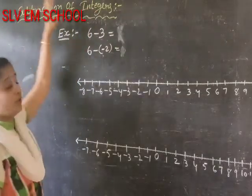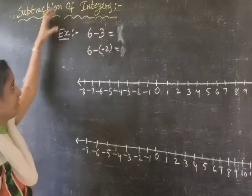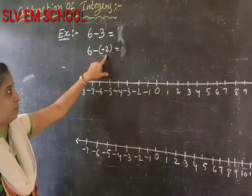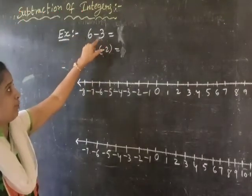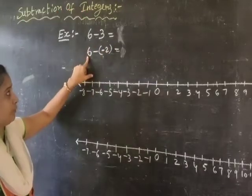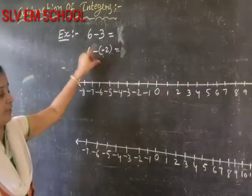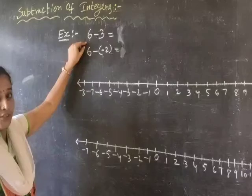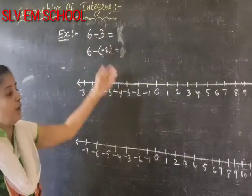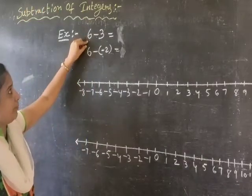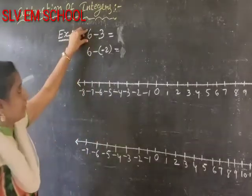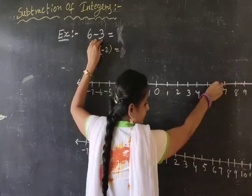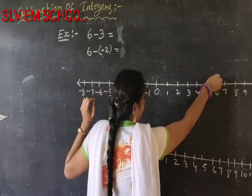Subtraction of Integers. When subtracting integers, move 3 steps to the left side on the number line. Why? Because positive integers subtract, so we have to move left side on the number line.